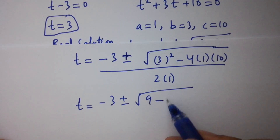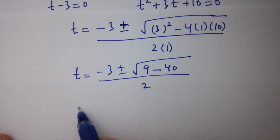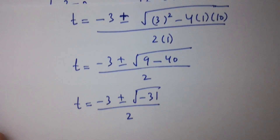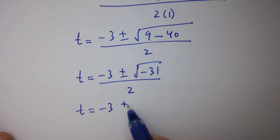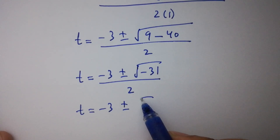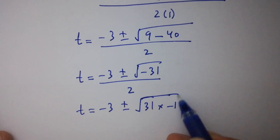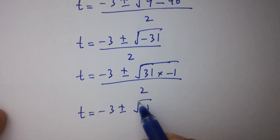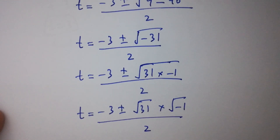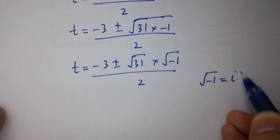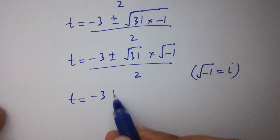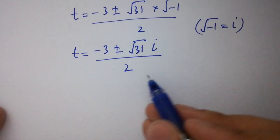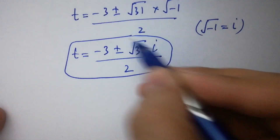Simplifying: t equal to minus 3 plus or minus square root of 9 minus 40 over 2, which gives t equal to minus 3 plus or minus square root of negative 31 over 2. We know that square root of minus 1 equals i from complex numbers, so t equal to minus 3 plus or minus square root of 31 times i, over 2. This gives us our complex solution.